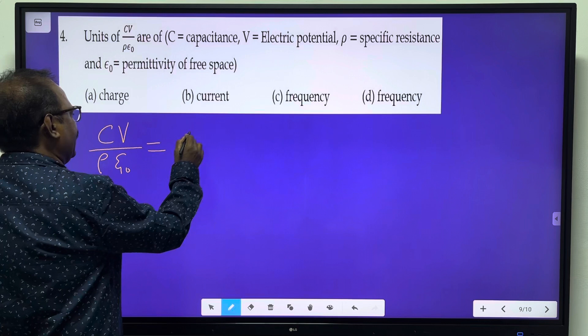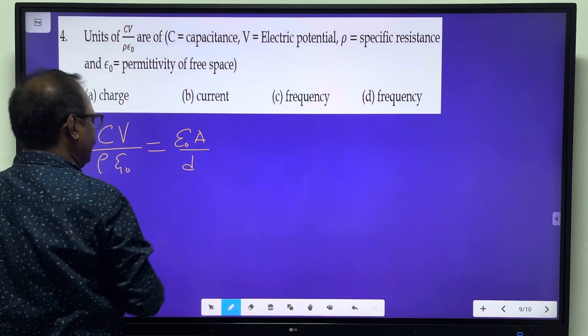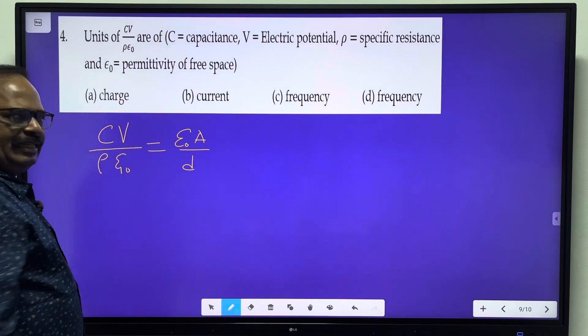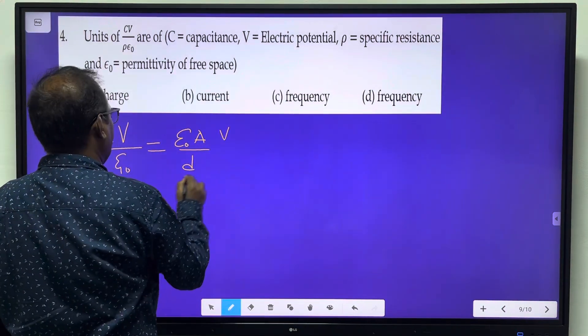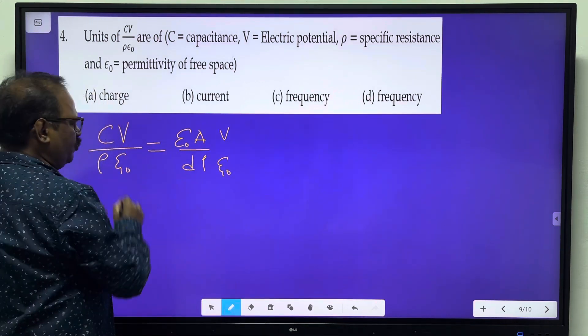Capacitance of a parallel plate capacitor: C = ε₀A/d. We use this formula capacitance equals ε₀A/d.